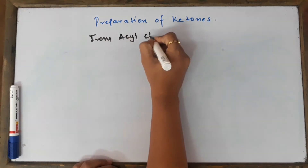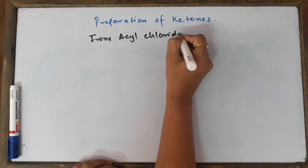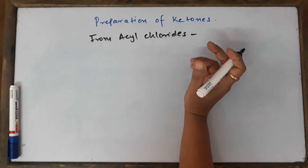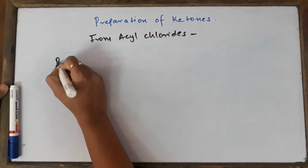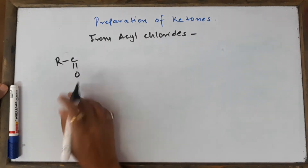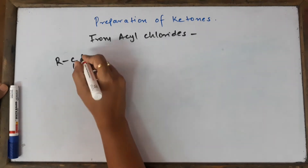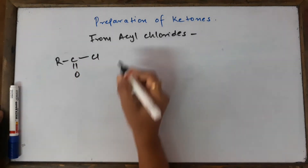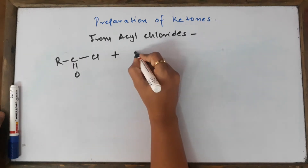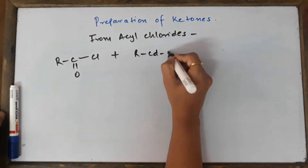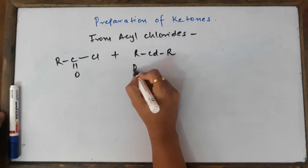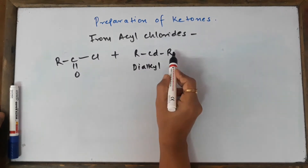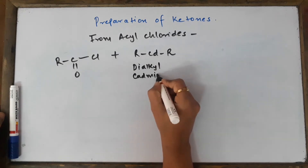These methods will be useful for conversions, so if you understand them it will be very good. Acyl means this particular group — R-C=O — and we are going to manufacture ketones from acyl chlorides by using a reagent which is quite famous: dialkyl cadmium.